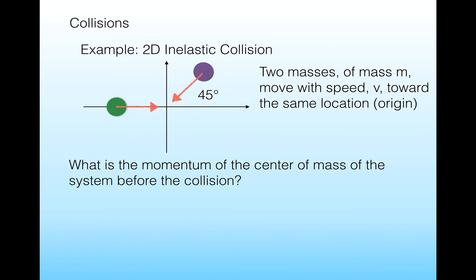Let's do an example of a perfectly inelastic collision — a 2D example. We have two masses, they both have mass m, and they're moving with initial speed v towards the same location at the origin, where they collide. We have to do this in two dimensions, so we can do each dimension separately, because what starts in x stays in x, and what starts in y stays in y. Just break everything down into their components.